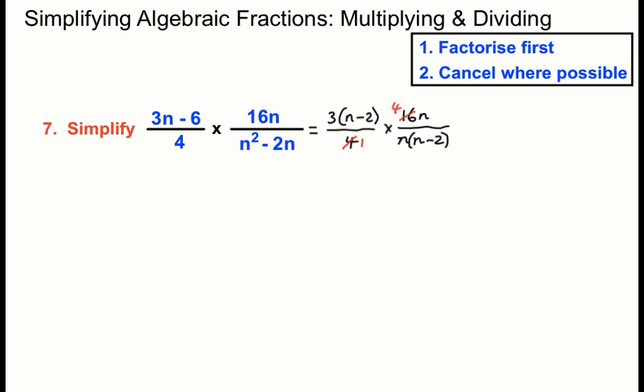4 can go into the bottom once and into the top 4 times there. n can cancel into an n once. n minus 2 can cancel into the bottom and divide into the top once there. So what are we left with? We're left on the top there with 3 times 4 which is 12. And on the bottom we've just got 1 times 1 times 1 which we don't really need to write in. So that boils down to 12 there after we do all our factorising and cancelling.